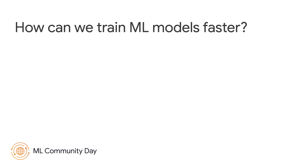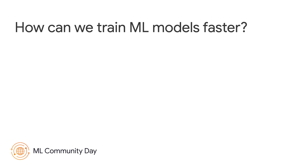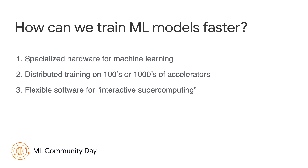In order to achieve this speed-up, there are three approaches that have proven to be useful. First, using specialized hardware for machine learning — Google has developed the TPUs with a custom design particularly for machine learning workloads. Second, the ability to scale your training on many accelerators in parallel. Distributed training on thousands of accelerators has proven to be a great technique for reducing the overall training time of ML models. And third, the software stack that is able to take advantage of such a scale of distributed accelerators is an important part of success in training models faster than ever before.